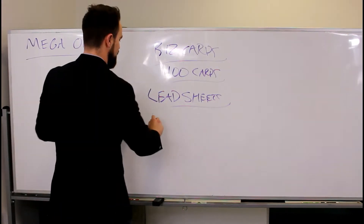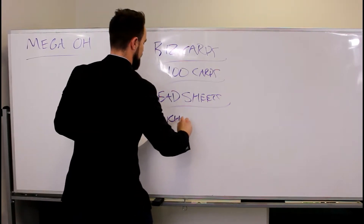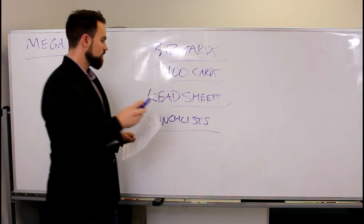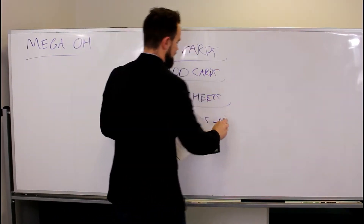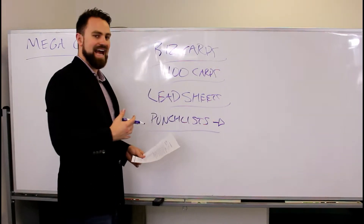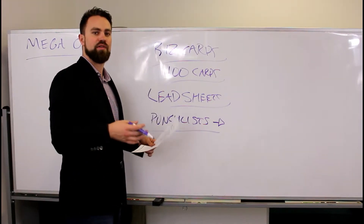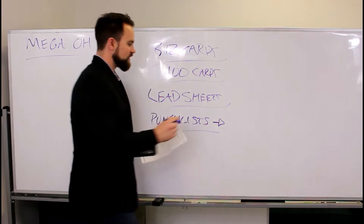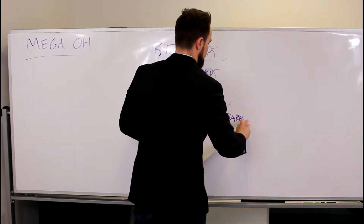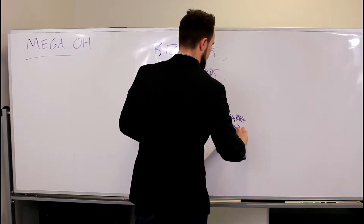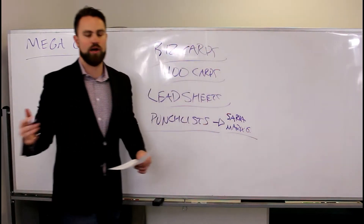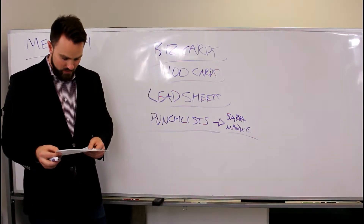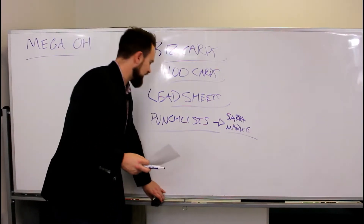Next thing: punch lists. Some of these properties are going to require a punch list. It will be emailed out to you by Sara and the admin team. If there is a punch list, make sure you bring it with you, complete it, and bring it back to the office. If you have any questions, message Sara and also reach out to Mark Green — or whoever is in that role when you're watching this video.